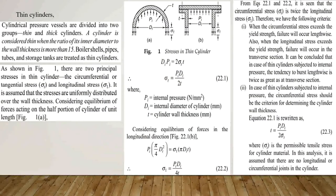We start from thin cylinders. Cylindrical pressure vessels are divided into two groups: thin cylinders and thick cylinders. When the ratio of the inner diameter to the wall thickness is more than 15, the cylinder is called a thin cylinder. When the ratio of inner diameter to wall thickness is less than 15, those cylinders are called thick cylinders.